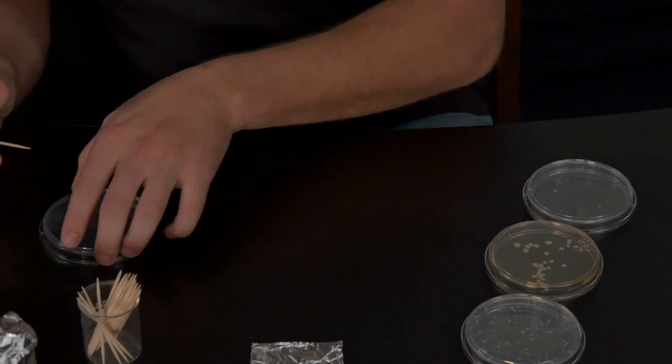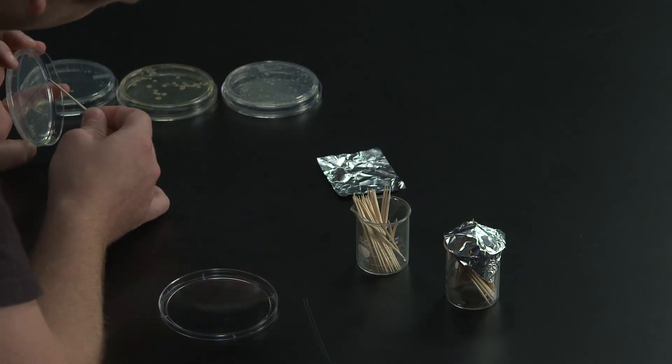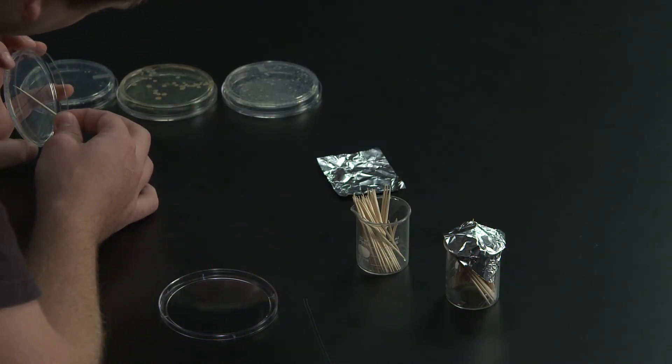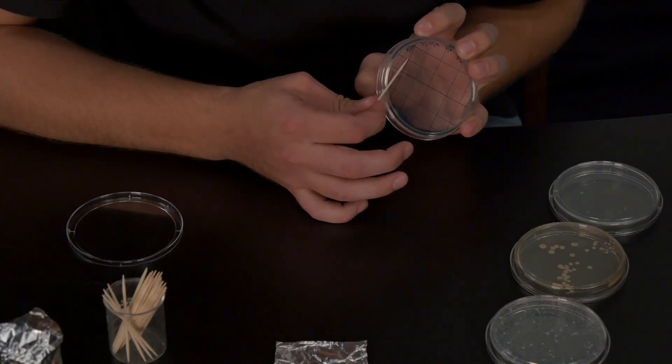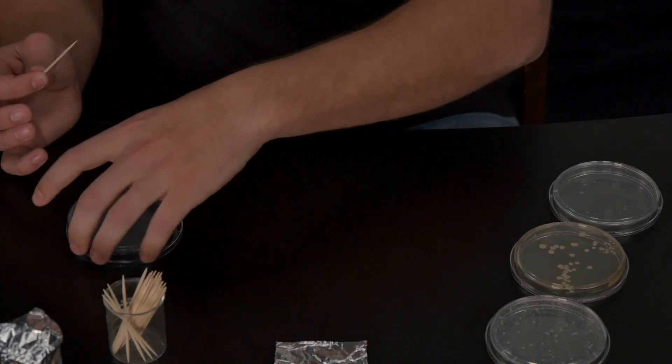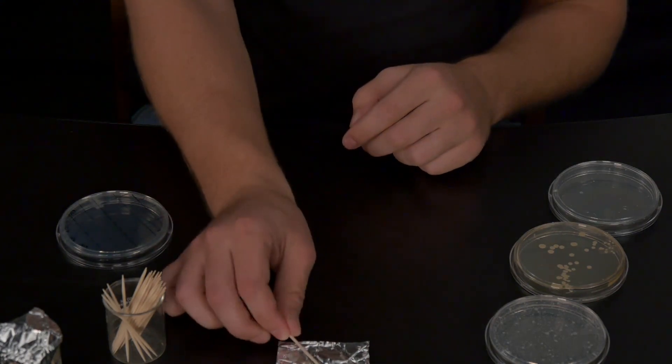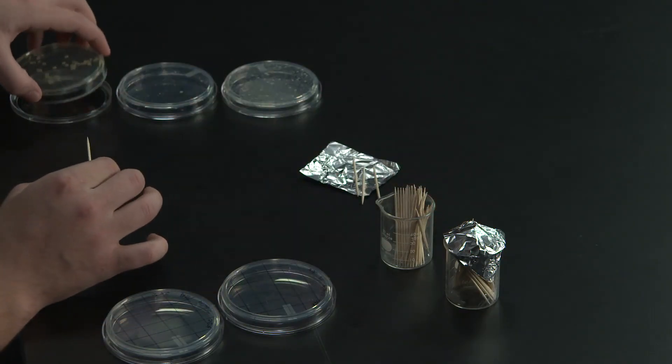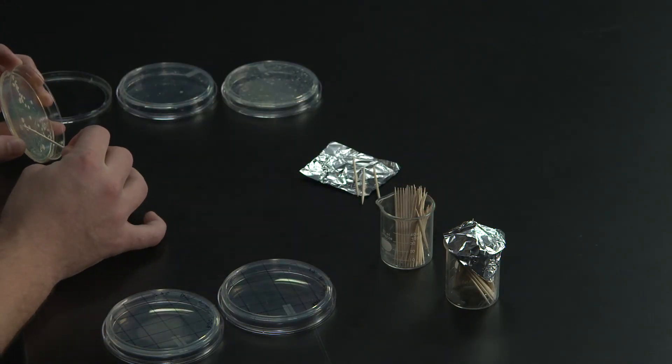With the toothpick, gently touch the center of this colony and transfer it to another plate in the first grid space. On the new plate, be careful not to tear through the agar. It is important that you lightly touch the agar surface as you spread the bacteria.